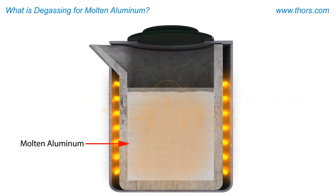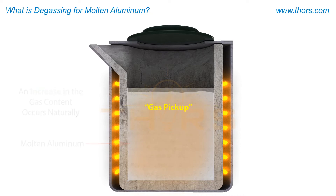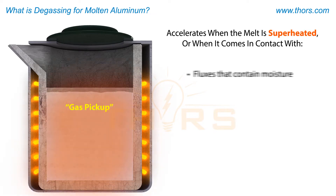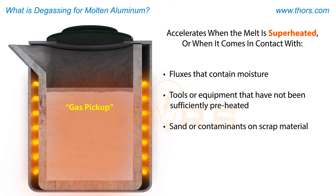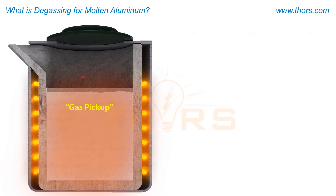When aluminum is molten, an increase in gas content referred to as gas pickup occurs naturally. Gas pickup accelerates when the melt is superheated or when it comes in contact with fluxes that contain moisture, tools or equipment that have not been sufficiently preheated, sand or contaminants on scrap material, mold materials, and other equipment carrying moisture.